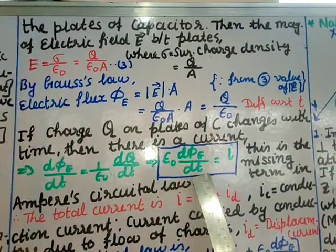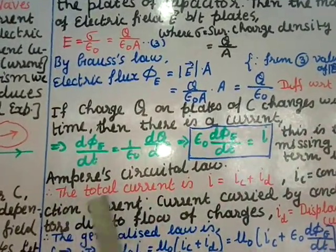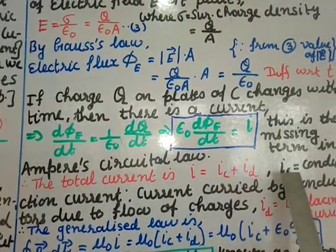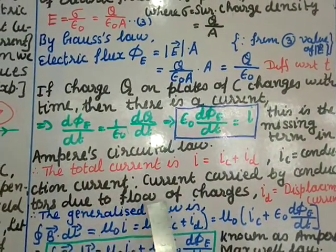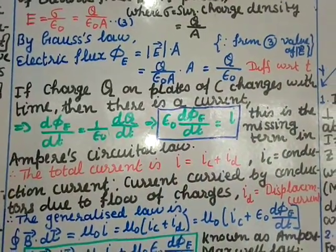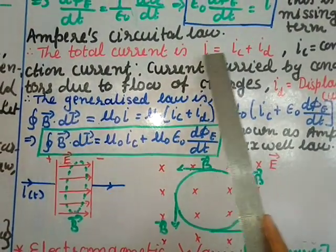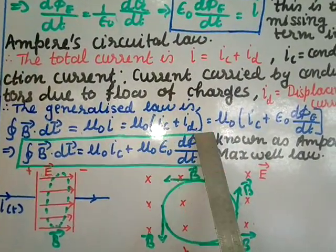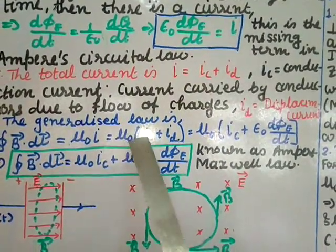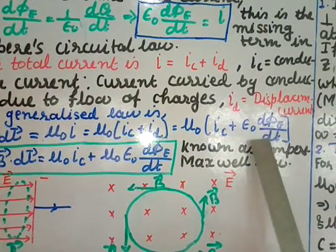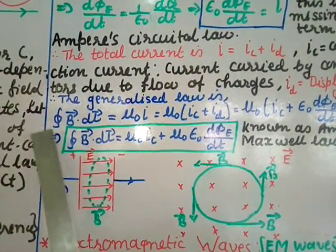The total current is i = ic + id, where ic is the conduction current — carried by conductors through the flow of charges — and id is the displacement current = ε₀ dφₑ/dt. The generalized Ampere-Maxwell law is: ∮B·dl = μ₀(ic + id) = μ₀ic + μ₀ε₀ dφₑ/dt.